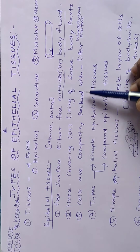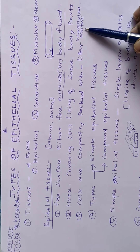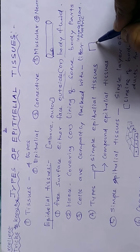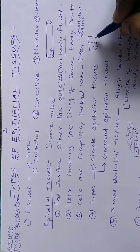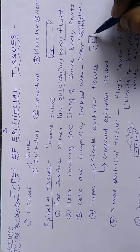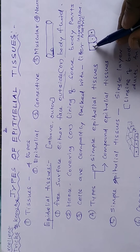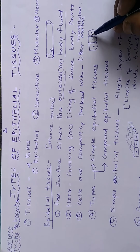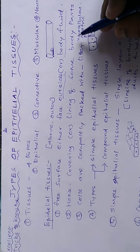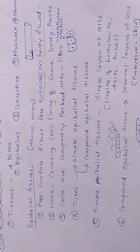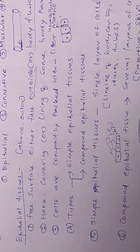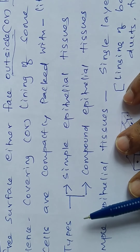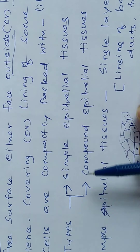The cells are compactly packed with little intercellular matrix. One cell to another cell is compactly packed with little space — little matrix or intercellular space. There are two types of epithelial tissue: simple epithelial tissue and compound epithelial tissue.